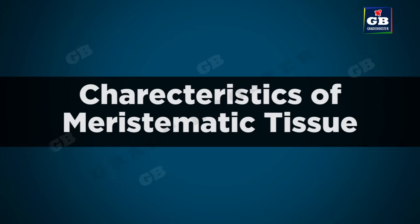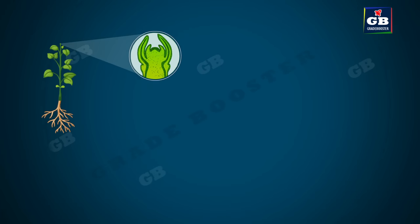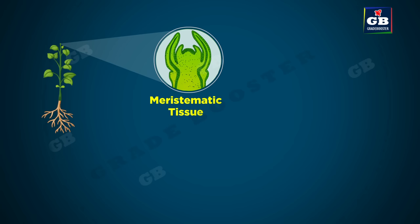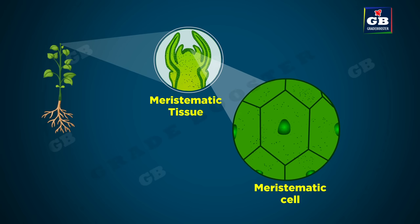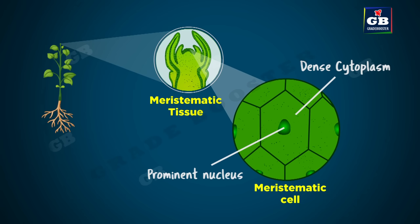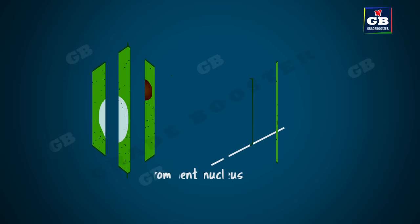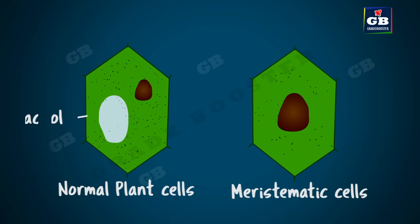Now let us see the characteristics of meristematic tissue. The cells of meristematic tissues are very active. The cytoplasm of meristematic tissue is very dense. It has a big prominent nucleus and the cell wall is thin. Generally plant cells possess big vacuoles, but meristematic cells do not have any vacuoles.